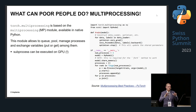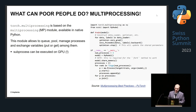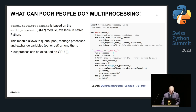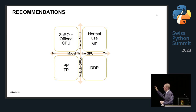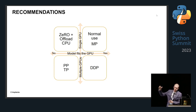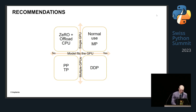Most of the models you have can be trained this way. If you're somewhere between rich and poor and have one GPU, your subprocess can be instantiated on GPU — that's absolutely fine. As a summary of advice: the main preferable approach is normal use of multiprocessing — this is good and absolutely enough for the majority of researchers. If you want something else, you can try pipeline parallelism, tensor parallelism, or data parallelism.